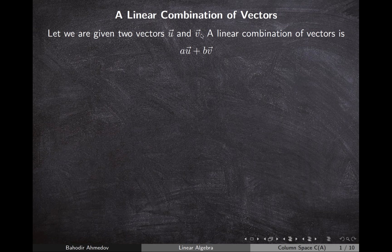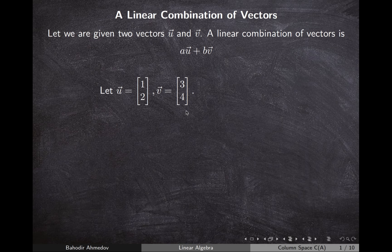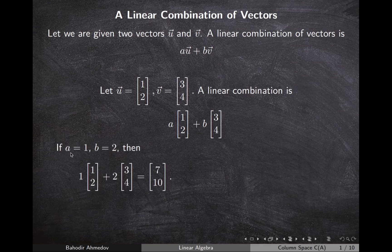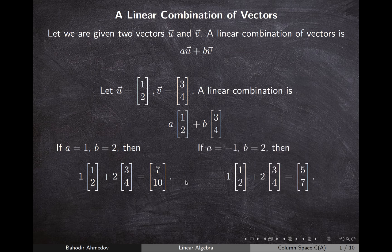Given two vectors u and v, a linear combination is when we multiply u by some constant a and v by some constant b, and add them. For example, if u is the vector (1, t) and v is the vector (3, 4), the linear combination in general form is a·u + b·v. If a = -1 and b = 2, the combination gives the vector (5, 7).